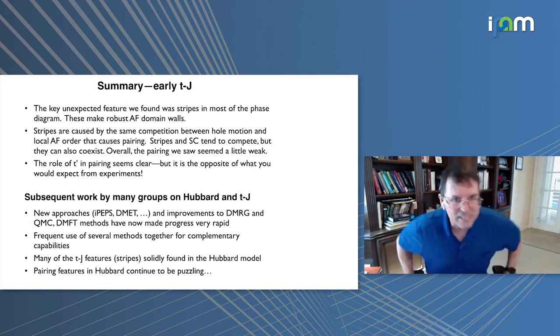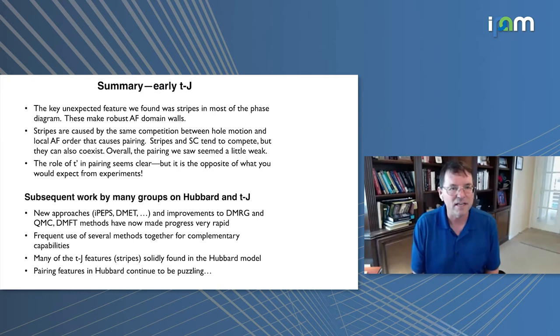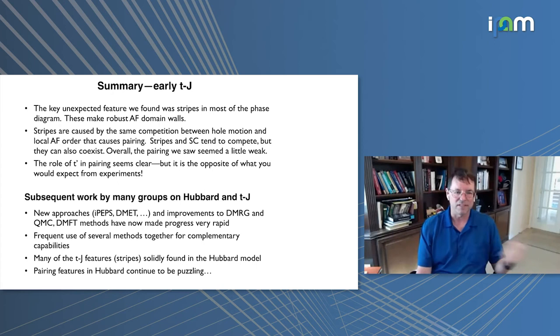A summary of this work that we did over more than a decade. This key unexpected feature we found, although it had been seen in Hartree-Fock calculations, but we found stripes in most of the phase diagram that make these robust anti-ferromagnetic domain walls. The stripes are caused by the same competition between hole motion and local anti-ferromagnetic order that causes pairing. The stripes and superconductivity tend to compete a bit, but they can also coexist. The other conclusion we had is that overall the pairing we saw seemed to be a bit weak. The role of T prime, which is going to be a crucial feature of our phase diagram, seemed to have a clear thing that the opposite sign of what you would expect from the experiments was what seemed to give the most robust superconductivity.